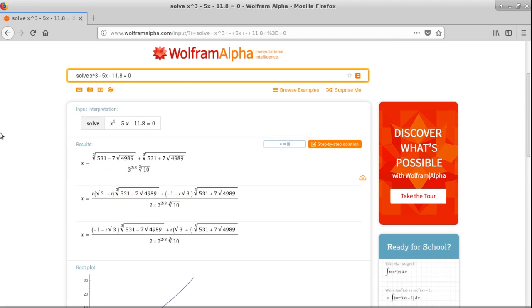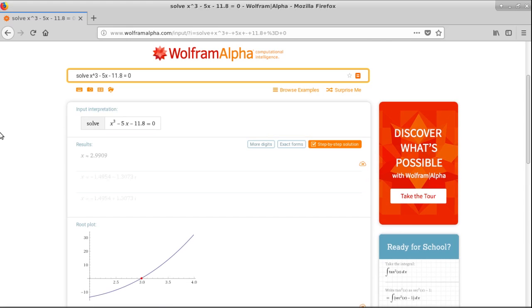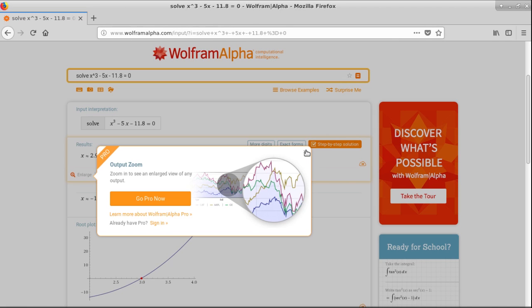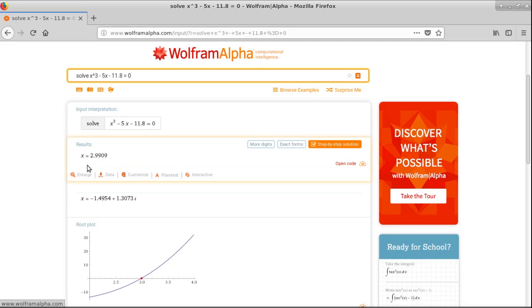Go back to the approximate forms. 2.9909. This is after some rounding, but that's okay. And if you want more digits, you can enlarge. If you pay, I guess. We're not going to pay. So this is good enough. 2.9909.